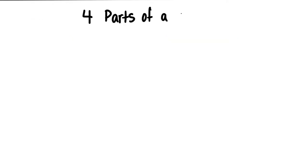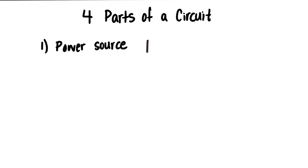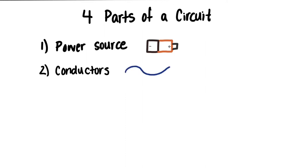A simple circuit usually has four parts to it. The first one is a power source — this is how we're going to give power to the circuit, for example, with a battery. Number two is conductors. These make the path for the electricity to flow, connecting the power source to the load, for example, wires.